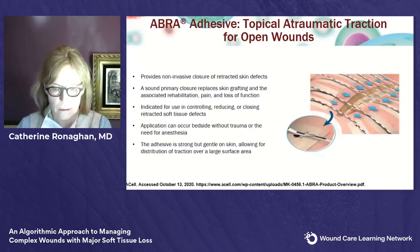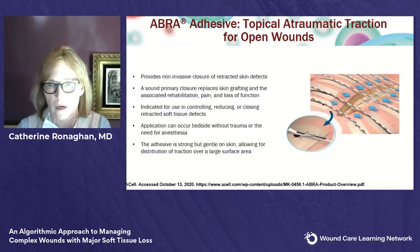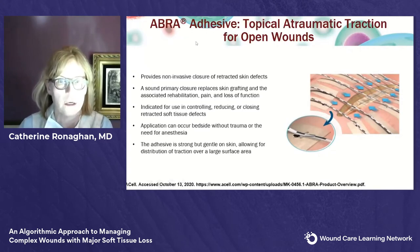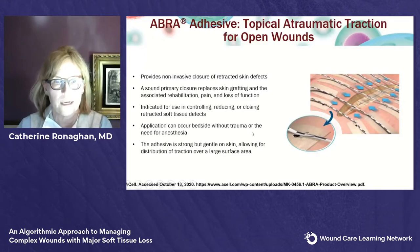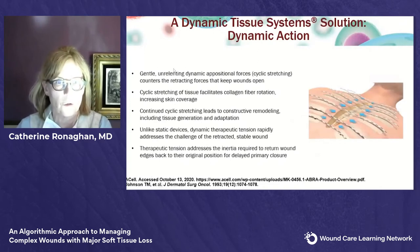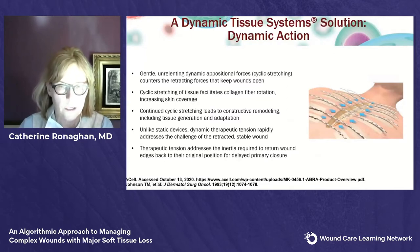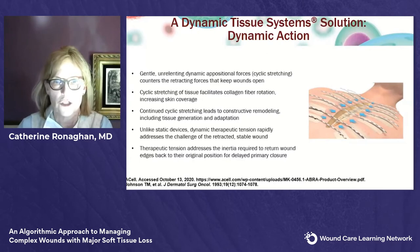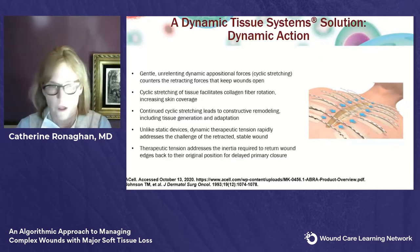Now let's talk about biomechanics. We have wounds where there is a lot of retraction or tissue loss, so we can use dynamic tension to address those. I'm focusing on the adhesive dynamic tissue system, applied at bedside on one patient and in the OR on another. It allows for distribution of traction over a large surface area and medialization of skin and soft tissue edges — a gentle but unrelenting dynamic tension, as opposed to the old retention sutures with static tension that would tear through tissue.